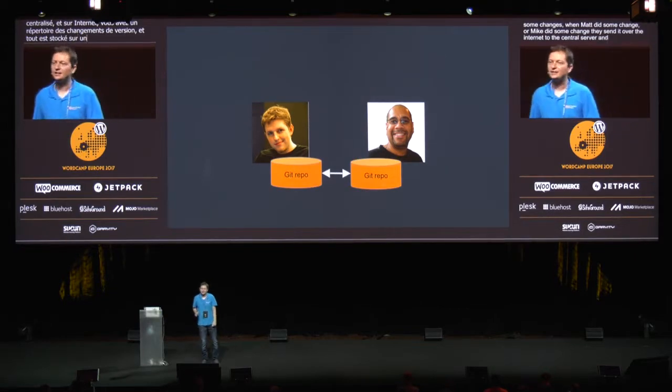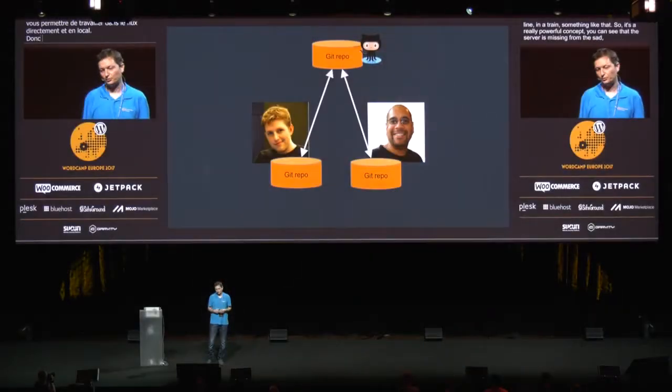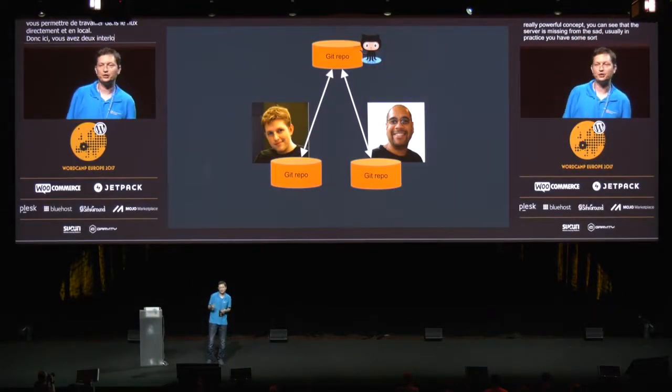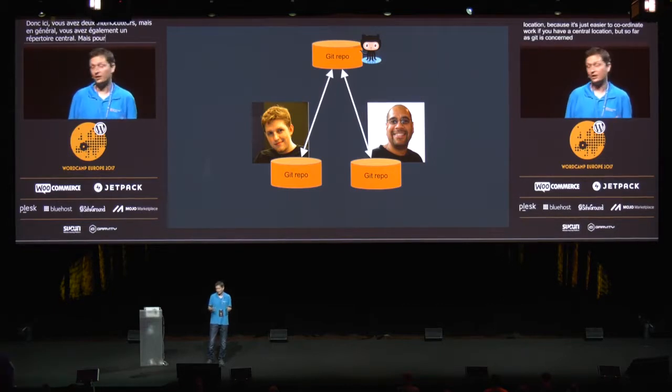Git is very different. With Git you have the entire repository available locally. That means that if you today clone the WordPress Git repository, you will get all 14 years worth of commits available locally. So you can inspect the history locally, create commits, work offline on a train. You can see that the server is missing from this slide. Usually in practice you have some sort of central location to coordinate work, but as far as Git is concerned, this is just another copy of the repository — they are technically the same.